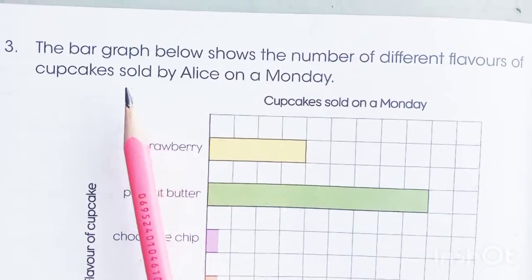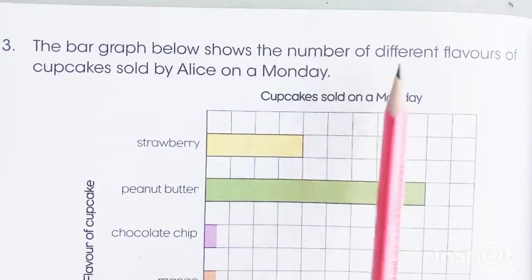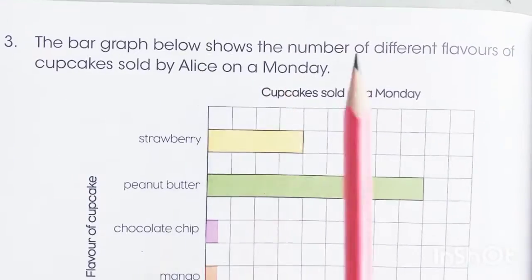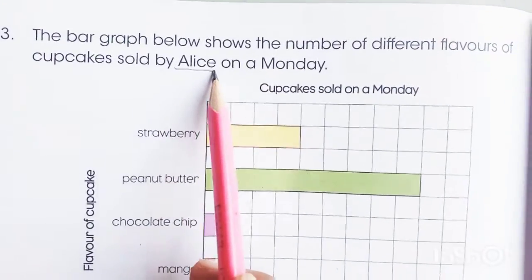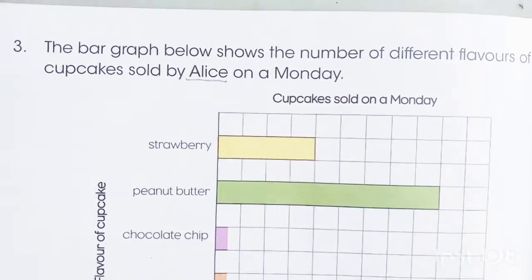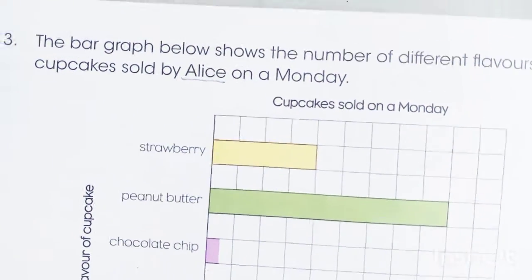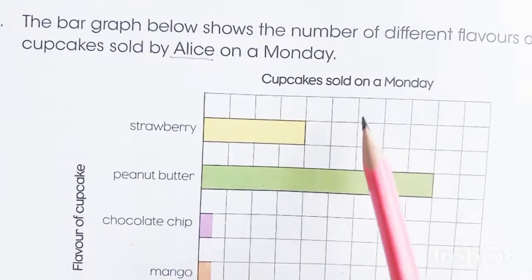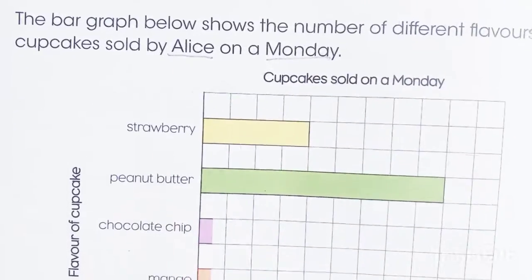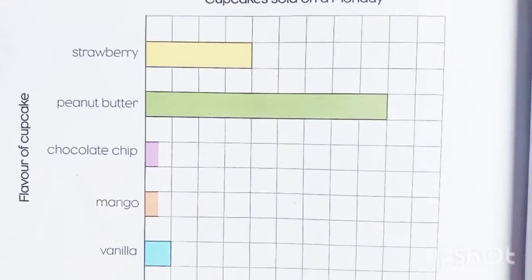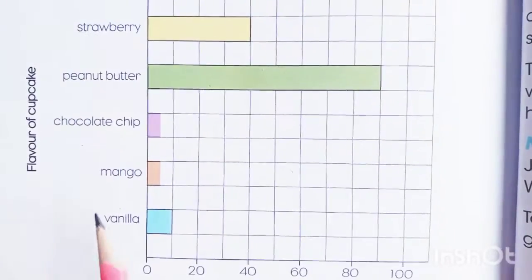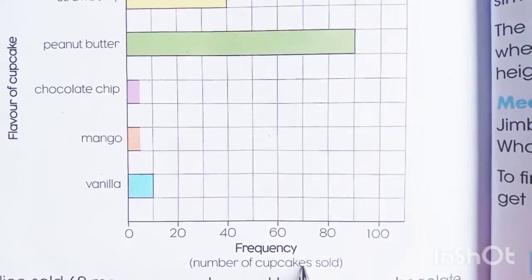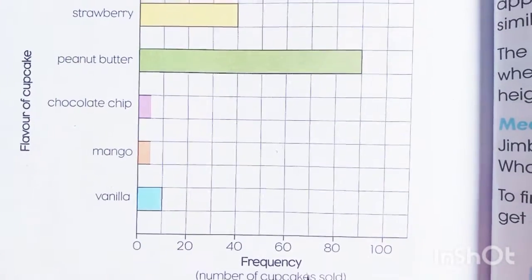The bar graph below shows the number of different flavors of cupcakes sold by Elias on Monday. On one side there are flavors of cupcakes, and on the other side there are the frequency or number of cupcakes sold by different flavors.